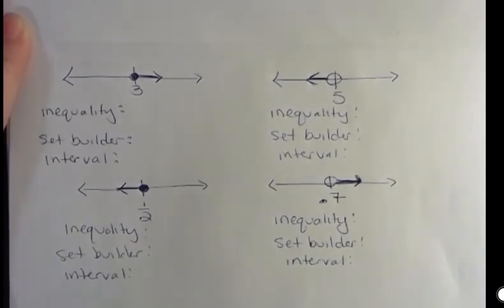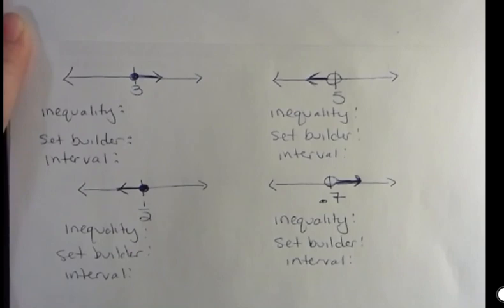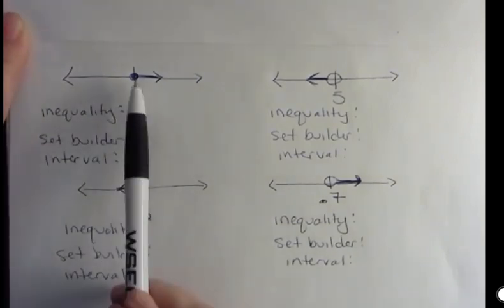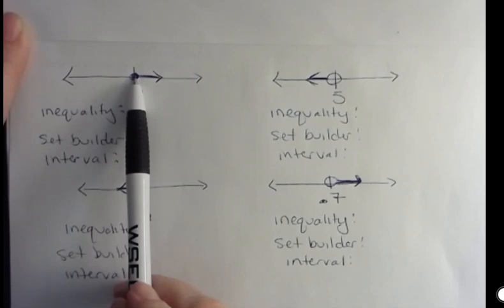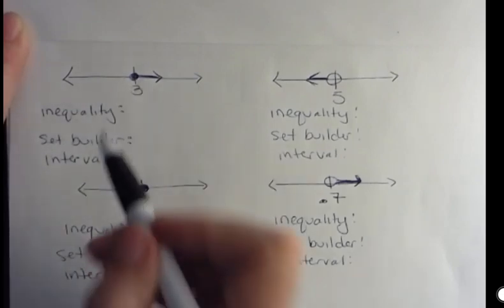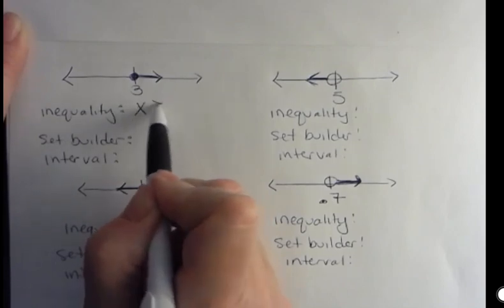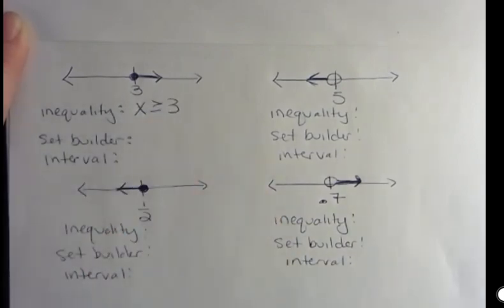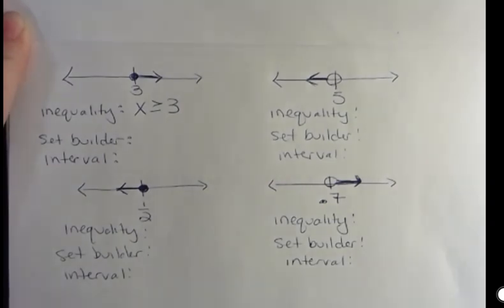Hello, I'm Carly McEvoy. I want to talk about the different formats you can put your answer in when you're graphing an inequality. We already looked at what these would be. This one right here, because we have a solid circle, would be greater than or equal to, and we look at this number. I'm going to use x for all of these. So x is greater than or equal to 3. That's the inequality, and you should be able to go through and write the inequality for all of these answers.